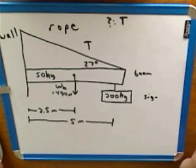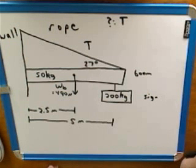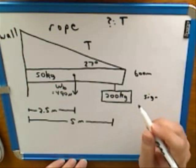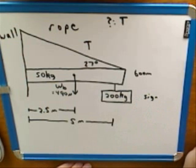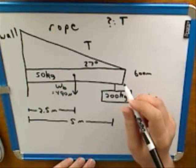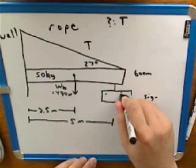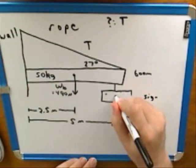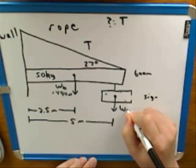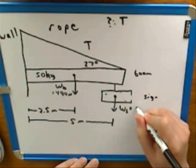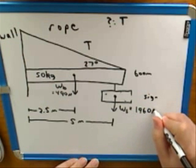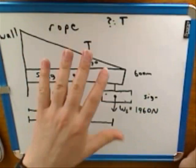We also have the weight of the sign. What did you get for that? 1960 newtons. And where is that weight applied? The point of application is the center of the 200-kilogram sign. So that weight — 1960 newtons — is applied at the end of the boom where the sign hangs.